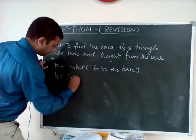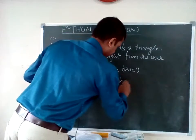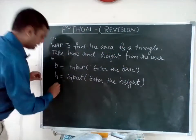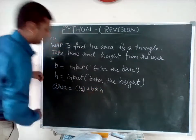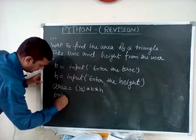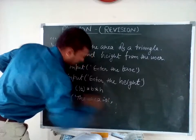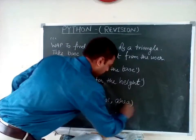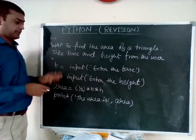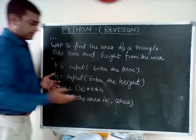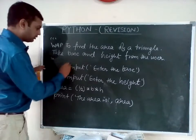If h is equal to input — enter the height — and if area is half into b into h, then print the area is, comma, area. In this case, if b is taken from the user, the data type will produce an error at calculation time. Also, if you remove the single comma, it will also give you an error. So you have to use the data type.